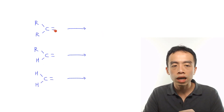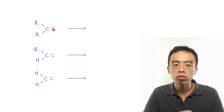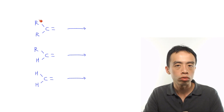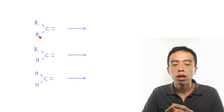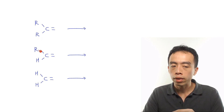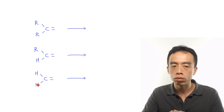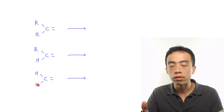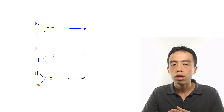The alkene carbon can either be bonded to two alkyl groups (R, R), an R group and a hydrogen (R, H), or two hydrogen groups (H, H). So we only have these three different situations.